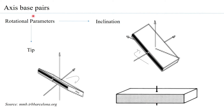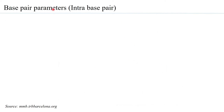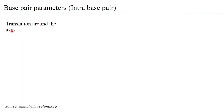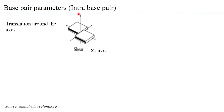By virtue of the way the base pair moves around the central helical axis, you can have two different conformations. Now, you can have base pair parameters with respect to one single base pair, but you can also have translational and rotational parameters within a base pair — called intra-base pair parameters. Let us look at the translation of bases within the base pair around the different axes. Consider x, y, and z axes in the 3D conformation.